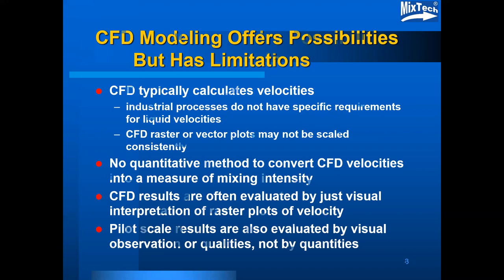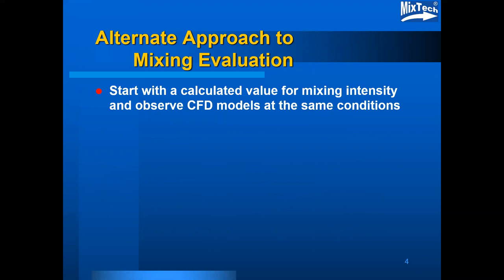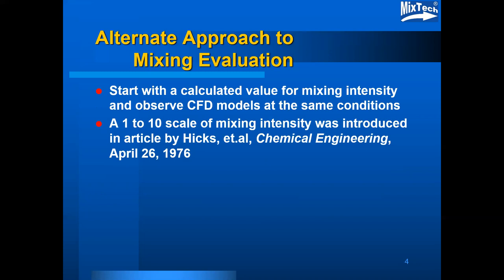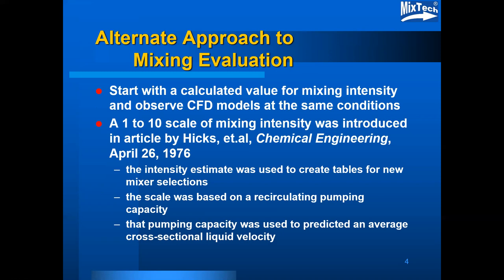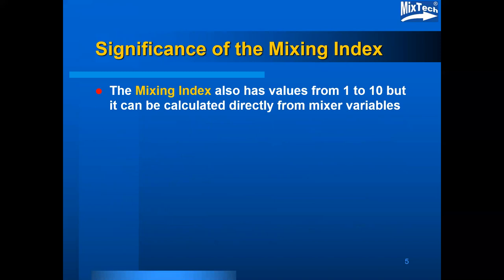An alternate approach to mixer evaluation starts with a calculated value for mixing intensity and then observing CFD models and other process measures to get an idea of what those represented under the same conditions. A 1 to 10 scale of mixing intensity was introduced in an article by Hicks and company in 1976. The intensity estimate was used to create tables for new mixer selections, and the scale was based on a recirculating pumping capacity used to predict an average cross-sectional liquid velocity. The mixing index follows some of the same kinds of ideas with values from 1 to 10, but it can be calculated directly from mixing variables and takes on its own value of mixing intensity.